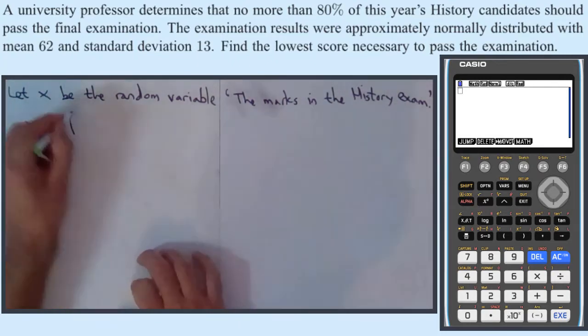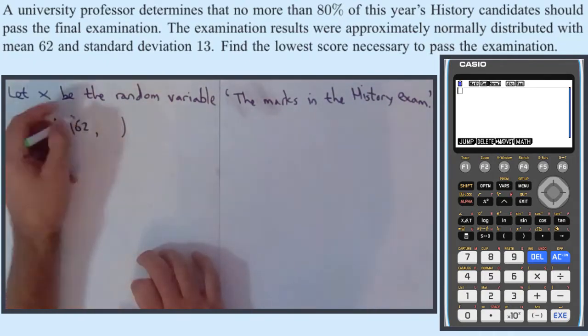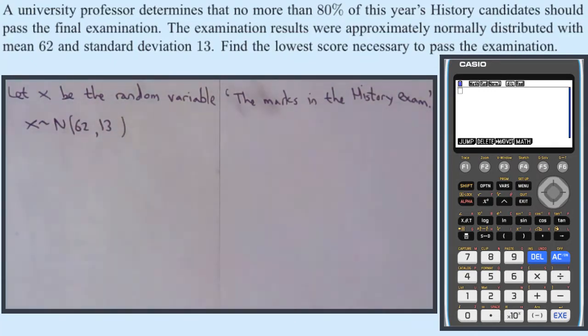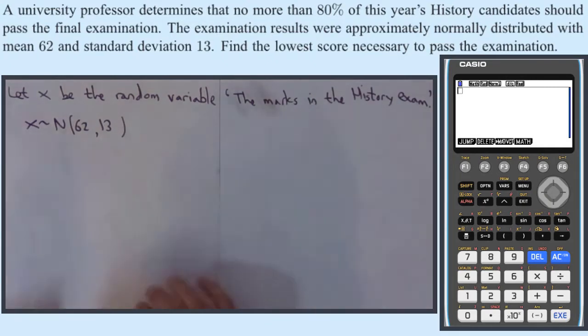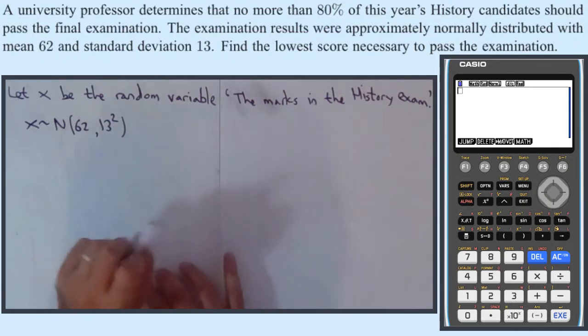X is distributed normally and we've been told the mean and the standard deviation. The mean is 62 and the standard deviation is 13. Like I said maybe a percentage it may not and it doesn't really matter for what we're trying to do. But this should be 13 squared, remember because we always need to put mean variance. You lose marks if you don't do that.